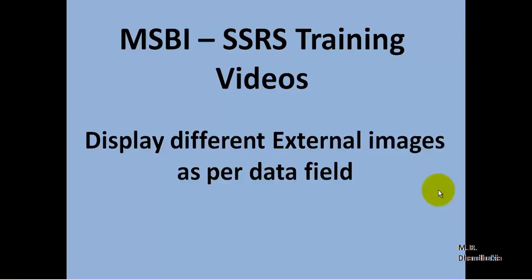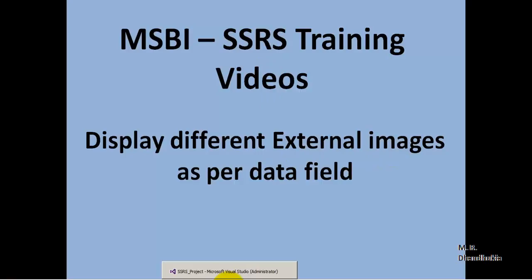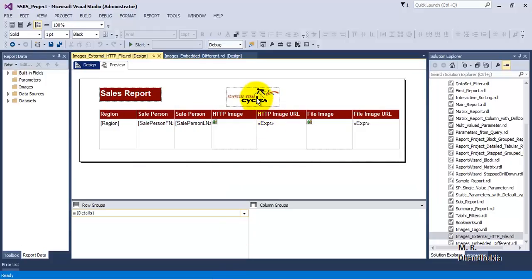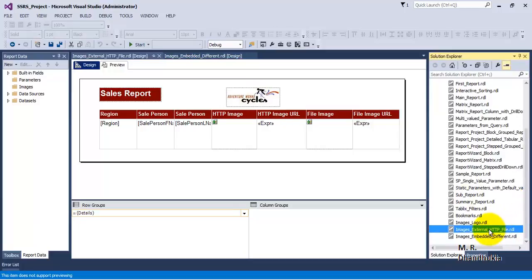In this video tutorial, let us see how to display external images as per data field in an SSRS report. In SSRS reports there can be 3 types of images: first is embedded, which we saw in the last video tutorial. Second type is database images, those stored directly in database columns, and the third type is external.